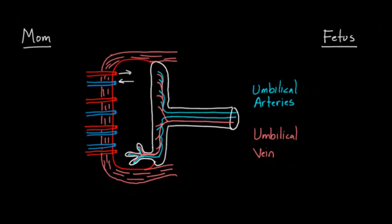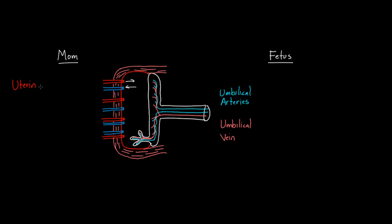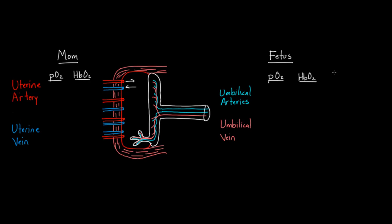On mom's side, we have uterine arteries and uterine veins — that's mom's half of this placenta. Now, going one by one through each of these vessels, we think about how much oxygen is present. Oxygen either comes in a dissolved form — we call that partial pressure of oxygen, with units of millimeters of mercury — or it's bound to hemoglobin. These same two options apply for the fetus as well.